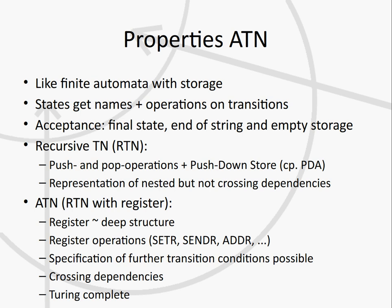The automaton is in a state, processing one input word at a time and taking transitions into other states. While on the transitions, some more actions can be performed. Similar to finite automata, an input string is accepted at the end if the augmented transition network is in the final state, if the whole input has been read, and if the storage is empty.